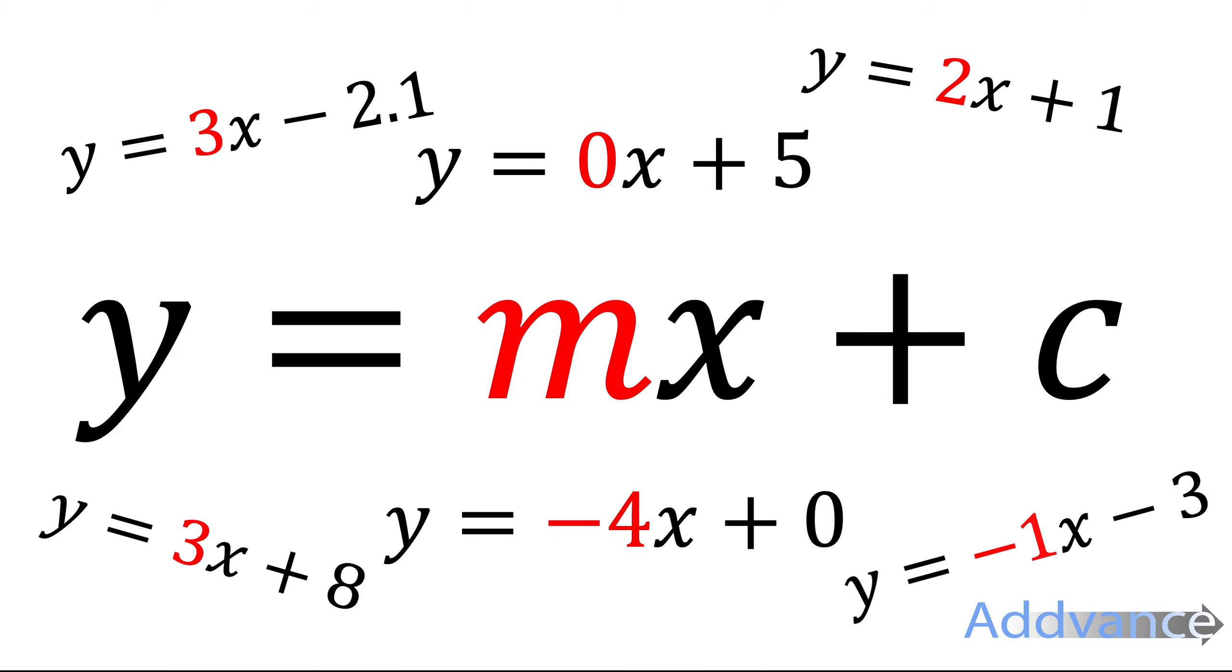Right, now here I've highlighted the m's in red. So the number in front of the x is always the m, and we've also got the plus c's highlighted in green.